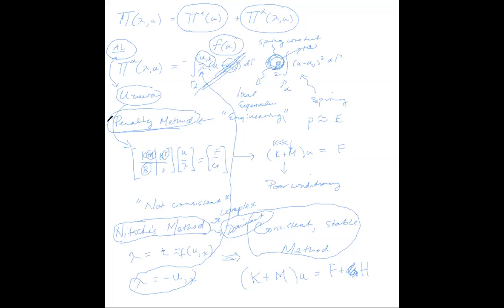In Nitsche's method, when you replace lambda with traction, that's not just an approximation — you're deriving it exactly and then replacing it, right? Yes, exactly. On Friday, BYU students, bring your codes — I'll send out an email about that.